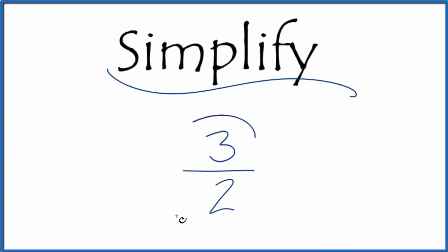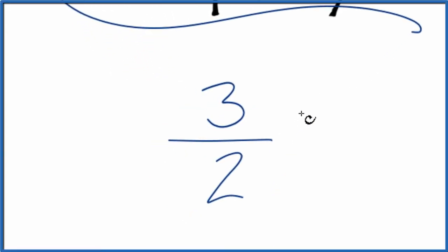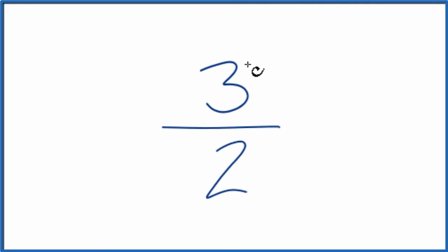Let's simplify the fraction 3/2. What we're trying to do is find another fraction that's equivalent, the same as 3 over 2, but it's in lowest terms.